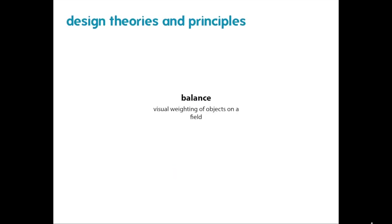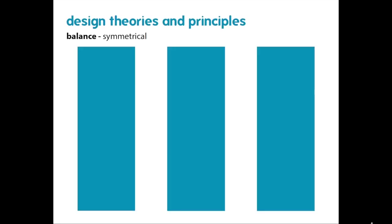The first thing we're going to talk about is balance — the visual weighting of objects on a field. The first type is symmetrical balance. Here we have three rectangles organized vertically; they're centered and equally spaced, giving a real sense of overall balance and order that is very pleasing to the eye. You have to be careful not to overuse symmetrical balance, as it can come across as banal and boring.